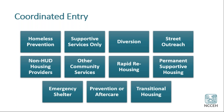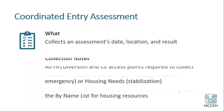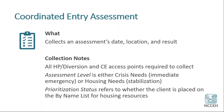We really want to emphasize that there's a role for each of us to play in a Coordinated Entry system. The first element we'll talk about is the Coordinated Entry Assessment. This collects an assessment date, location, and result. It is focused on collection at homeless prevention or diversion projects and any additional Coordinated Entry access points. Each of those projects is required to collect this, and this may differ in different local communities. It also collects an assessment level, which is either crisis needs for immediate emergency services or housing needs for stabilization.